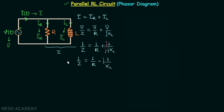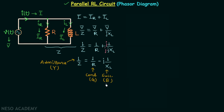The inverse of impedance is called admittance, the inverse of resistance is called conductance, and the inverse of reactance is called susceptance. Here we have 1 over XL, which is the inverse of inductive reactance, giving us inductive susceptance. We represent admittance by uppercase Y, conductance by uppercase G, and susceptance by uppercase B. For inductive susceptance we write BL. Finally, admittance equals conductance minus j times inductive susceptance.